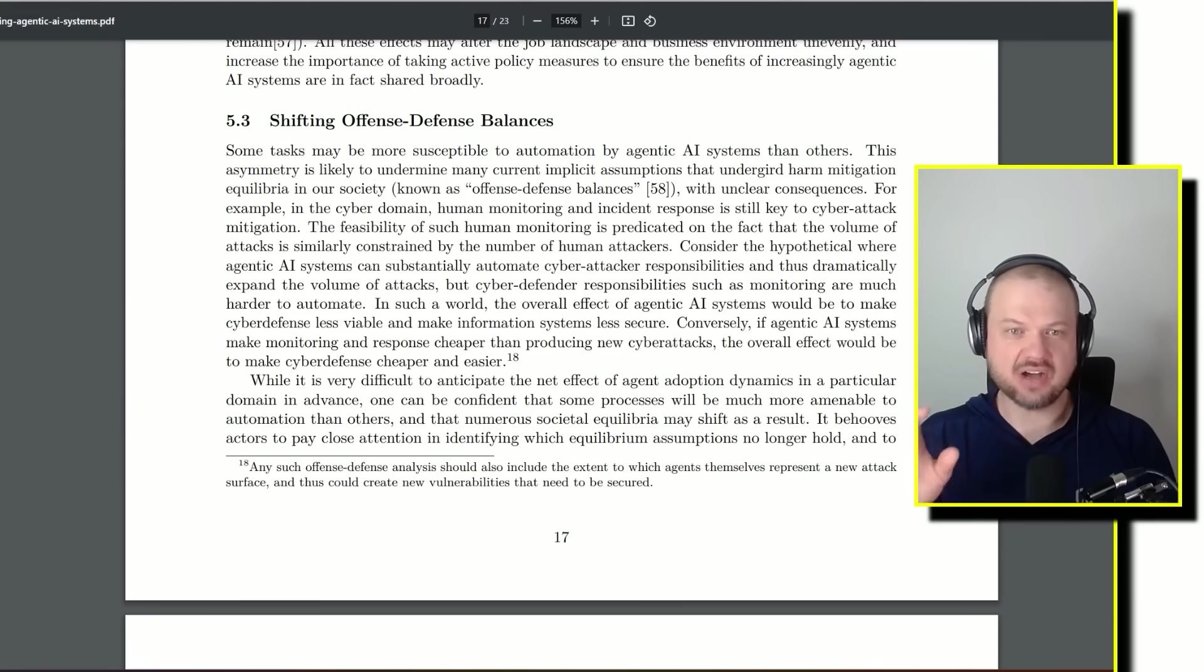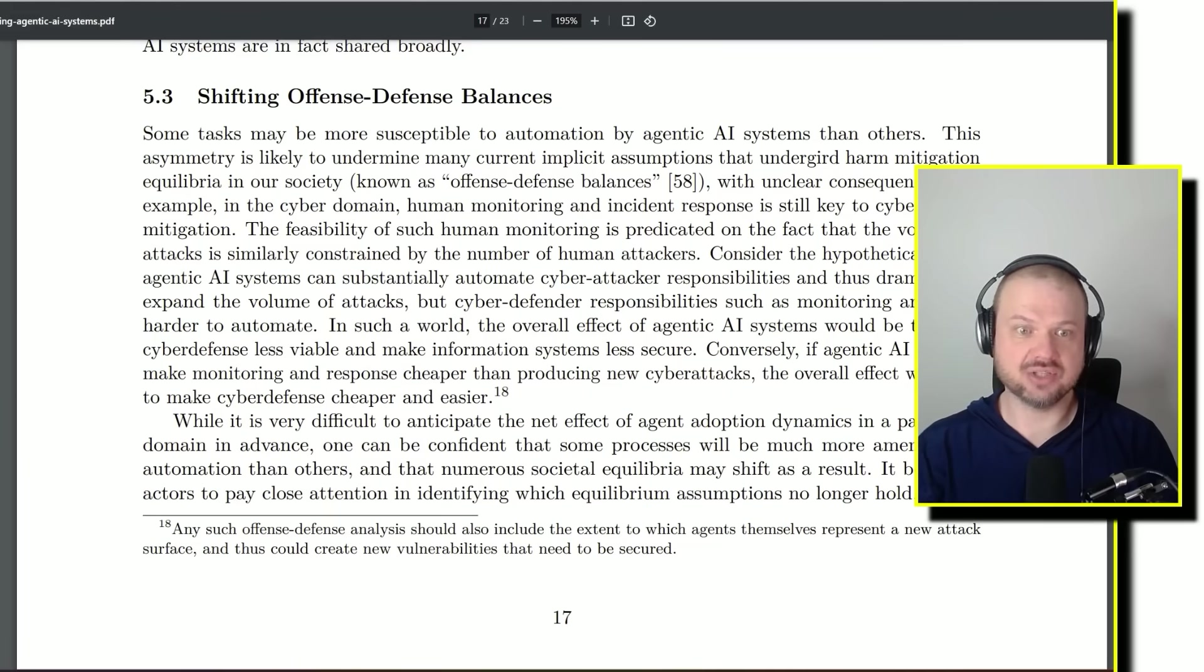And here, interestingly, they talk about the shifting of offense-defense balance. So some tasks may be more susceptible to automation by agents than others. So for example, in the cyber security domain, human monitoring and incident response is still key to cyber attack mitigation. So the feasibility of such human monitoring is predicated on the fact that the volume of attacks is similarly constrained by the number of human attackers.